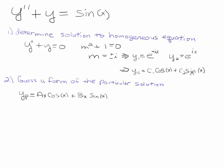But we notice that if we try to guess a particular solution that is just sine x, it'll be linearly dependent with our complementary solution. So we have to guess a form of the particular solution that is linearly independent. So we multiply by these x's here. So this would be the form of our particular solution.